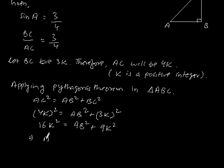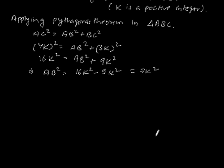Which implies AB square is equal to 7K square. So AB is equal to square root of 7K square, which is equal to root 7K.